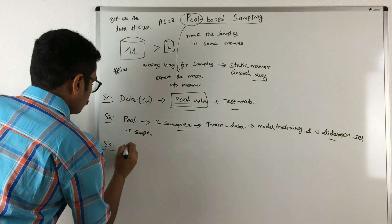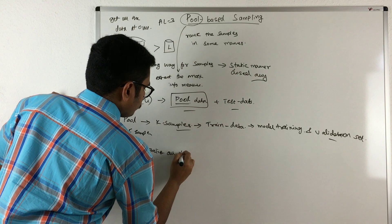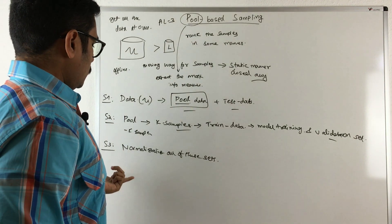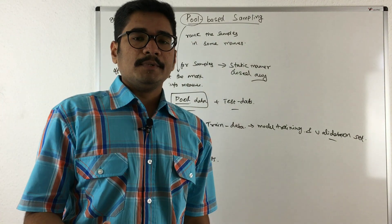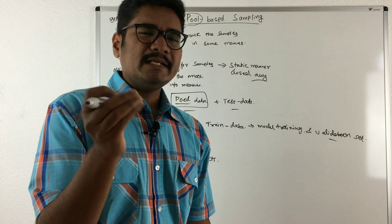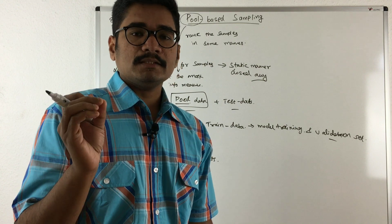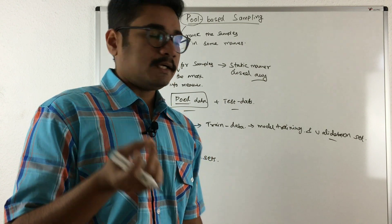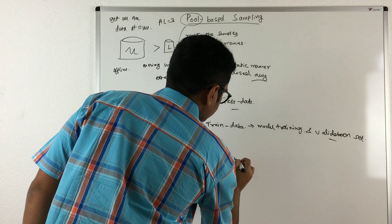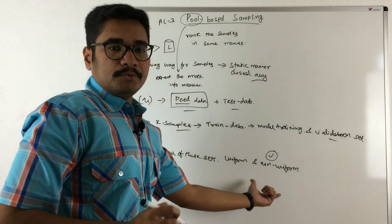Next, you need to normalize all of these sets. The reason is that in stream-based selective sampling we had uniform as well as non-uniform distributions. We are least interested in uniform distributions, but when there is a non-uniform distribution, querying becomes more meaningful — that is where smart labeling is needed. After normalizing, you can identify which sets are uniform and which are non-uniform, and we are interested in the non-uniform ones.